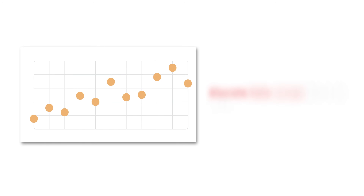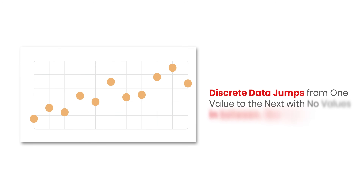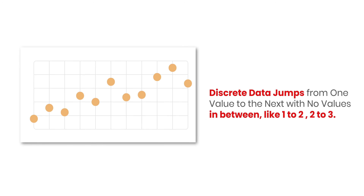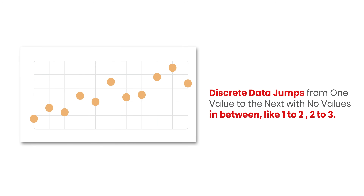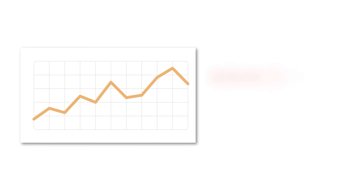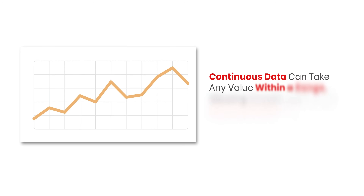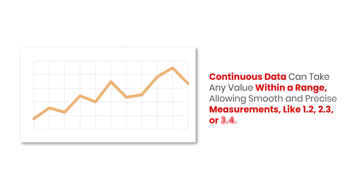The difference is that both types are numerical, but discrete data jumps from one value to the next with no value in between — for example, 1 to 2, 2 to 3 — while continuous data can take any value within a range, allowing smooth and precise measurements like 1.2, 2.3, and 3.4.